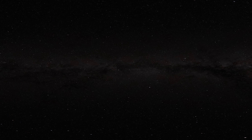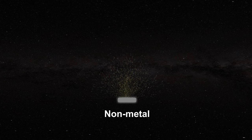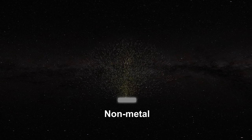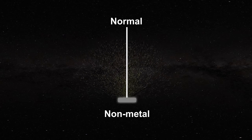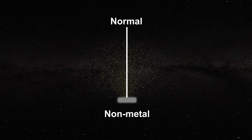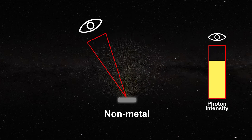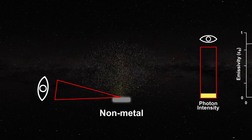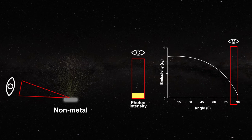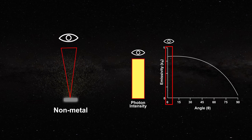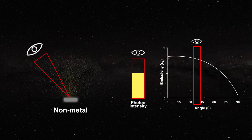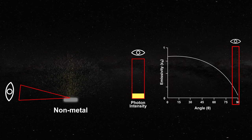To understand the emissive behavior of the Sun we should learn a little about directional light emission in real materials. When a non-metal emits photons it typically has maximal emission at the normal, meaning maximal emission is seen by looking straight down at the surface. As we observe from angles farther away from the normal, fewer photons reach our detector. When plotted, the emissivity is optimal at zero degrees and decreases gradually towards 90 degrees, tangential to the emitting surface.